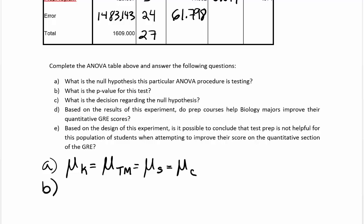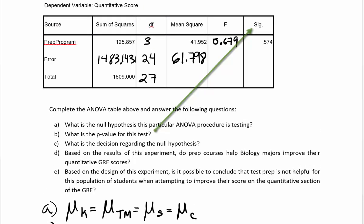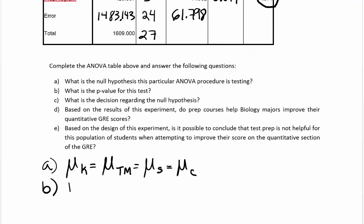Let's go for part B. It asks what's the p-value for the test. The p-value is that part of the ANOVA table that said significance. In SPSS, they use this sig notation. They're referring to the observed significance level, which is the same as the p-value. The p-value is equal to 0.574.